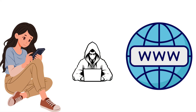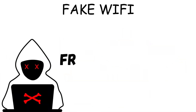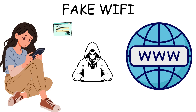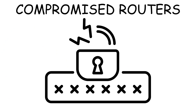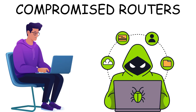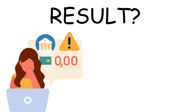Method 6: Man-in-the-Middle. Hackers position themselves between you and the internet. Common scenarios: fake Wi-Fi networks like 'Free_Airport_WiFi' intercept logins, messages, and bank transactions. Compromised home and office routers route all your traffic through hackers. Tools like SSL stripping downgrade HTTPS to HTTP, stealing secure data. Result: bank accounts drained, identity stolen.